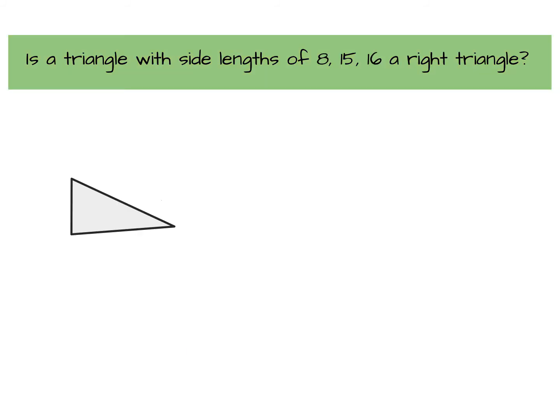Here we have another triangle with side lengths of 8, 15, and 16. So I'm going to start by labeling the triangle. I'm going to assume that the right angle is probably here, if it is a right angle triangle, making this side C, and A, and B.